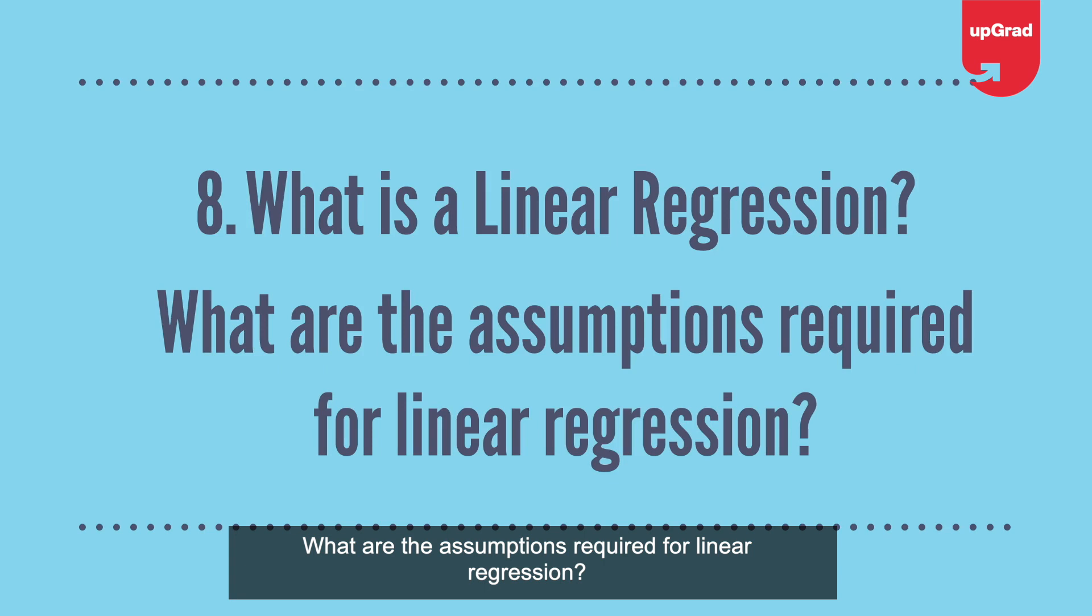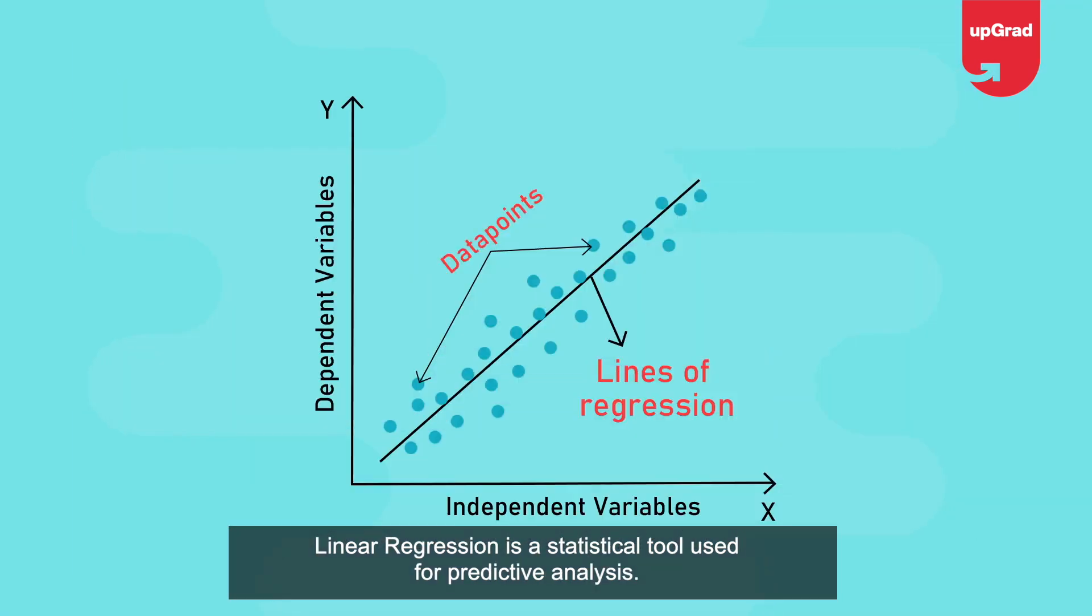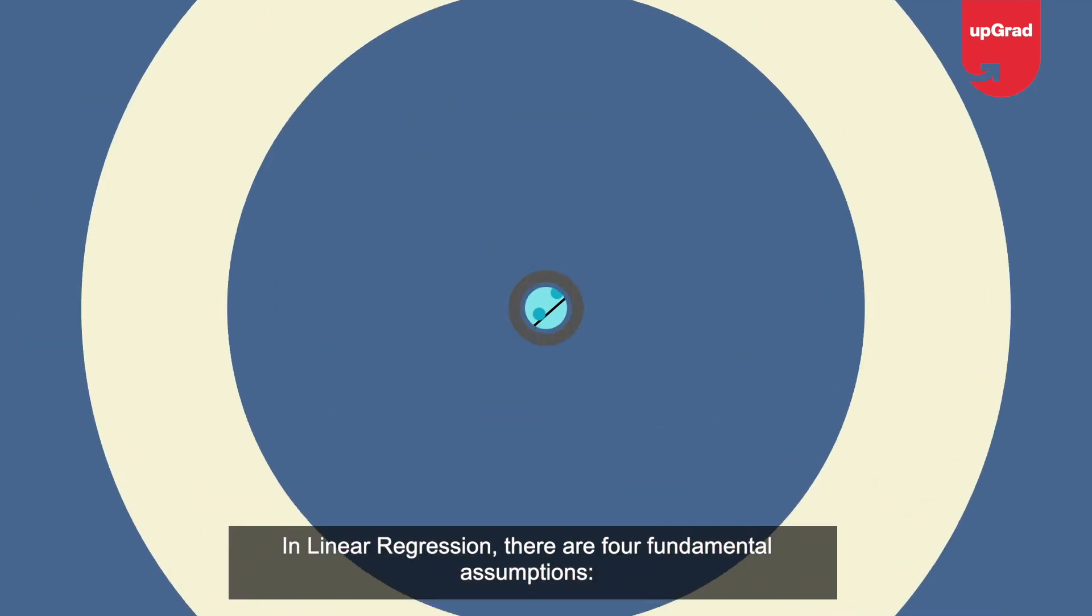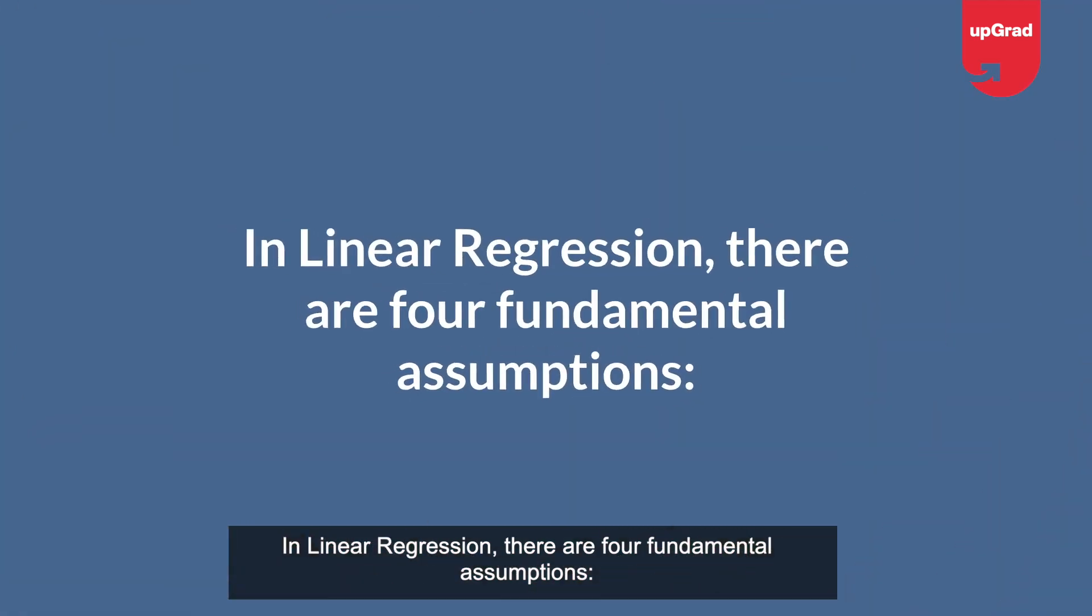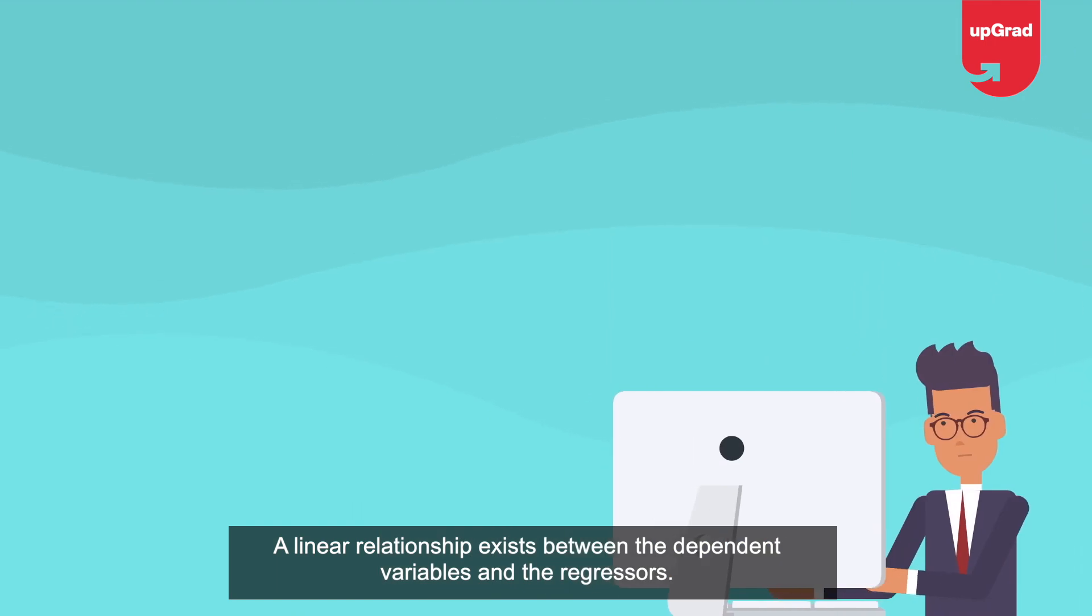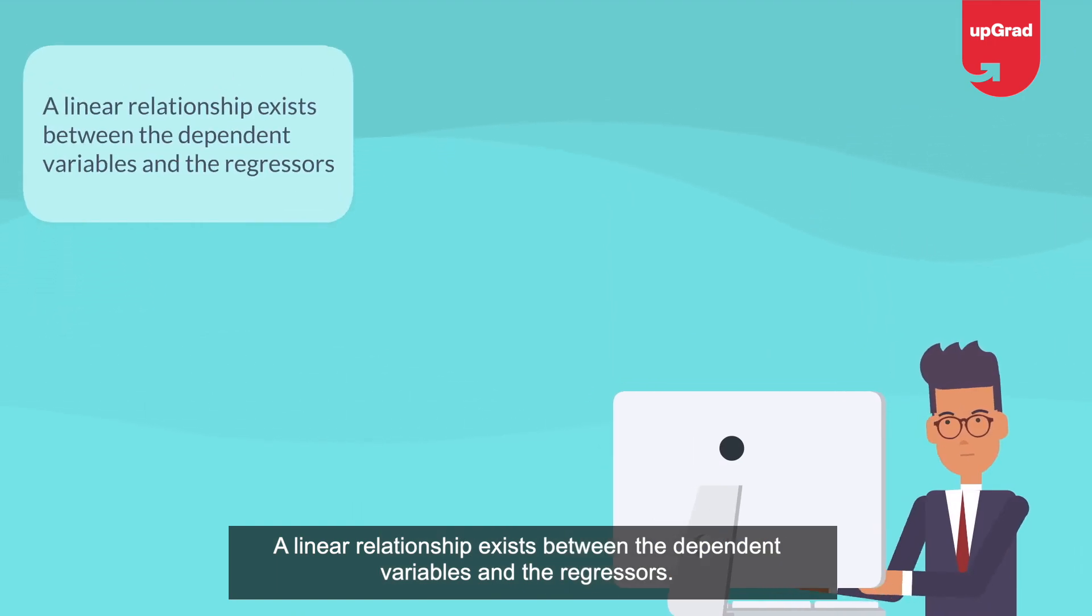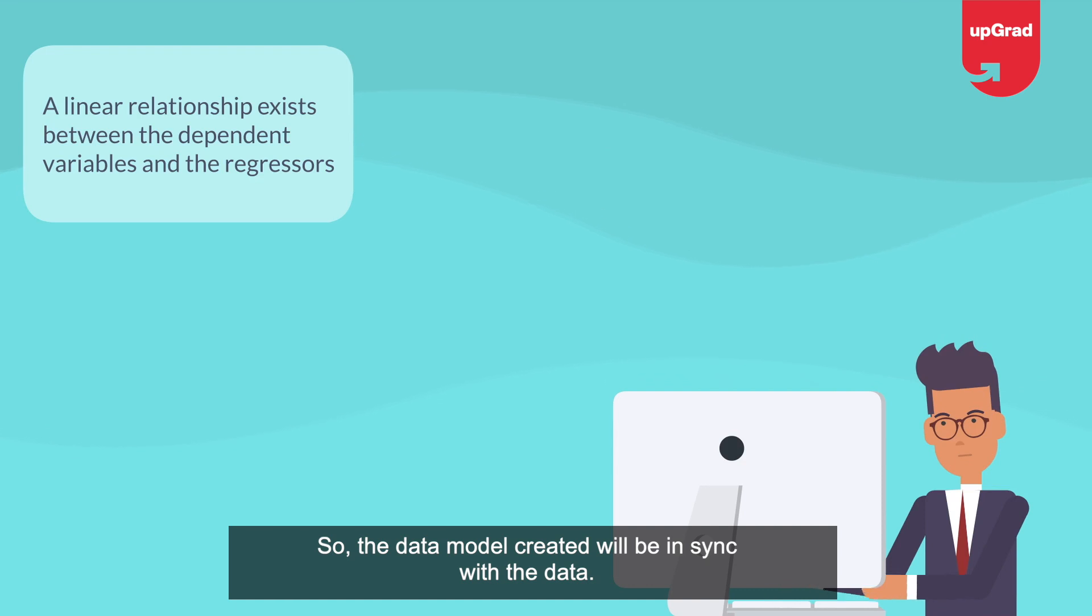Question 8: What is linear regression? What are the assumptions required? Linear regression is a statistical tool used for predictive analysis. In this method, the score of a variable, say Y, is predicted from the score of another variable, say X. Here, Y is the criterion variable, whereas X is the predictive variable. In linear regression, there are four fundamental assumptions: